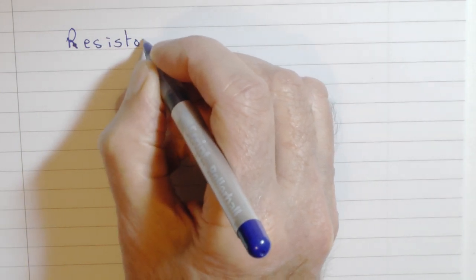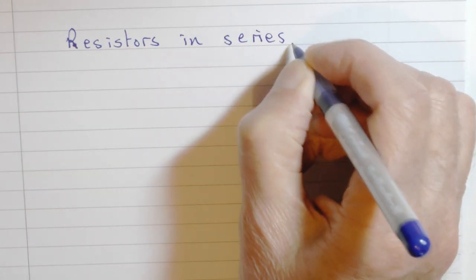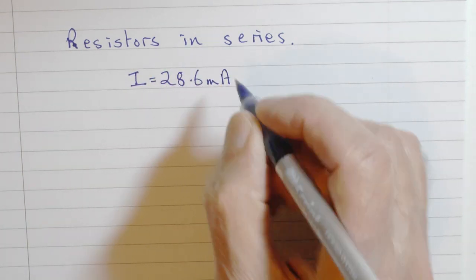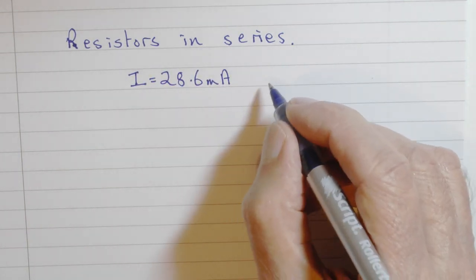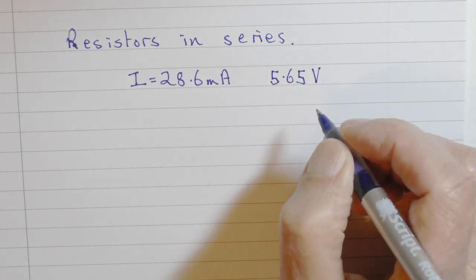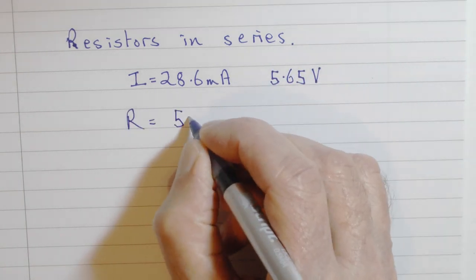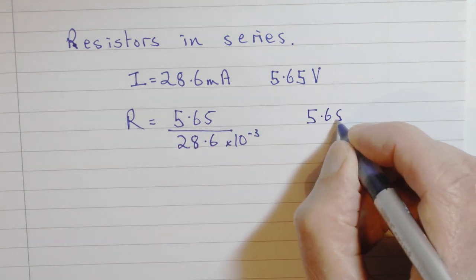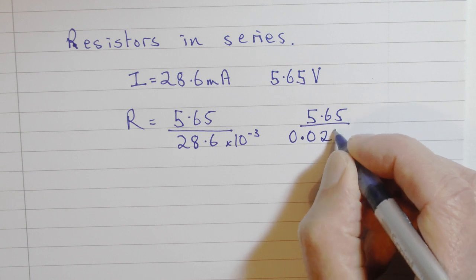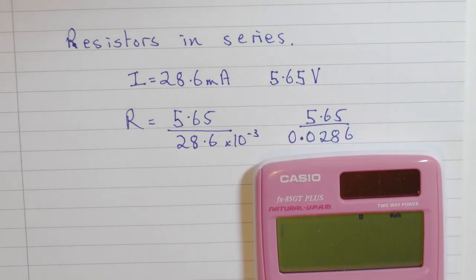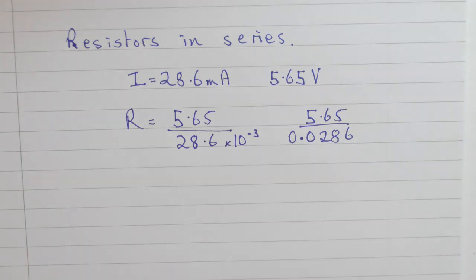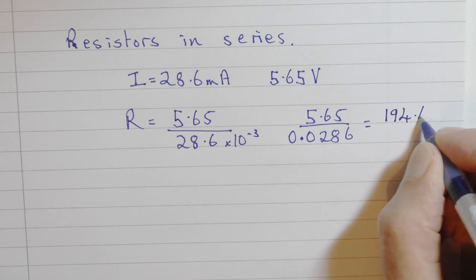For these two resistors in series, we can immediately see that the current is much less. So the total resistance must be much higher. The current was only 28.6 milliamps. The potential difference, 5.65 volts. The total resistance then, 5.65 divided by 28 milliamps, 28 times 10 to the minus three, which is 0.0286. Calculating that through just over 194 ohms, 194.4.